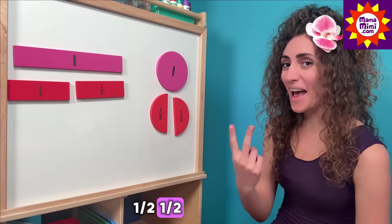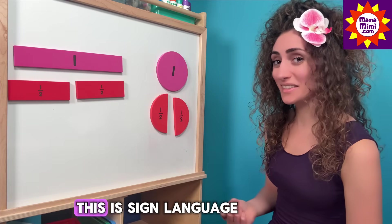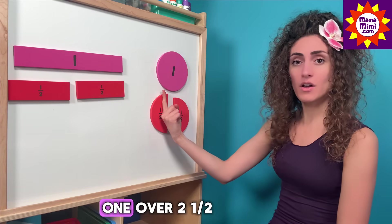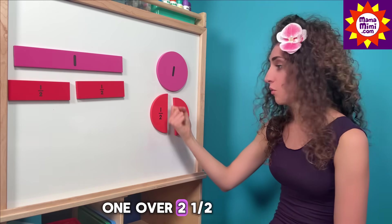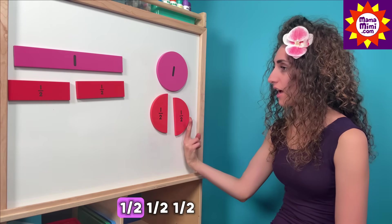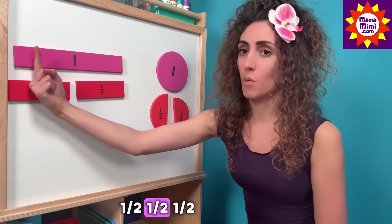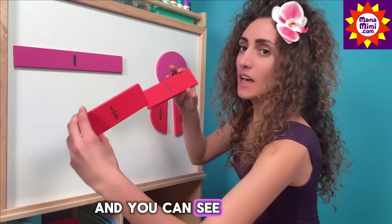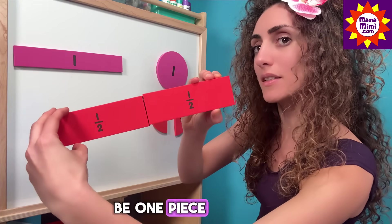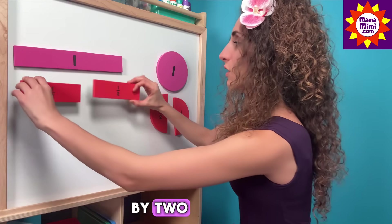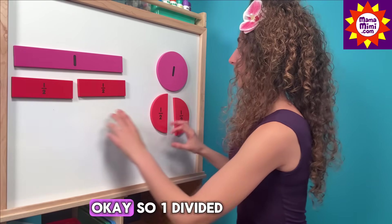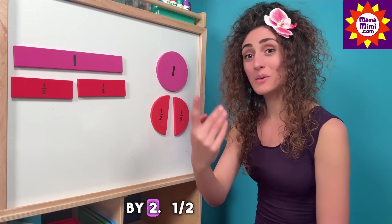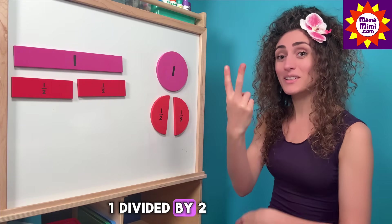One half. One half. This is sign language for one half. One over two. One half. One half. And you can see how this used to be one piece but now it's divided by two. So one divided by two.